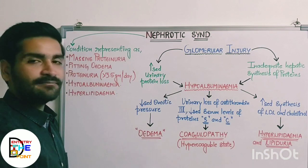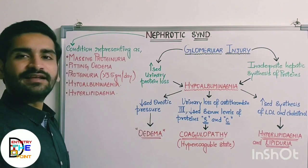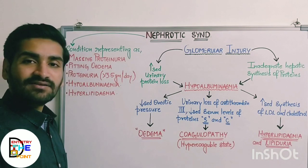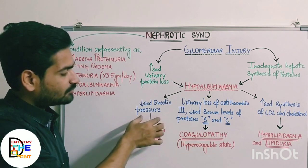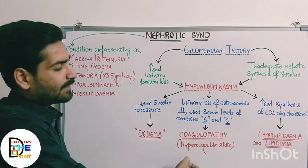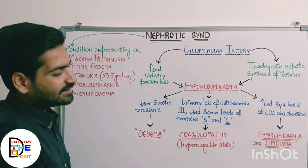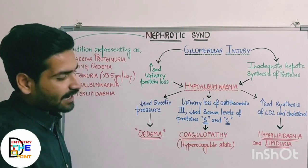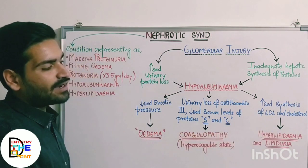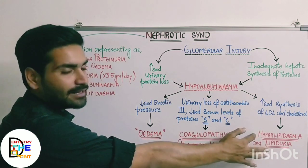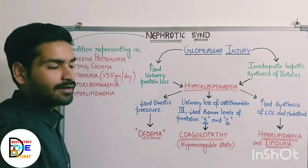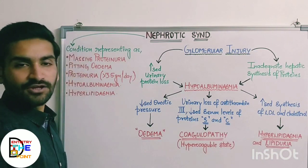Due to decreased oncotic pressure, intravascular fluids move into the extravascular spaces, causing edema. Due to urinary loss of antithrombin-3, there will be coagulopathy — a hypercoagulable state will develop. Due to increased synthesis of LDL and cholesterol, there will be hyperlipidemia, along with lipiduria — excretion of lipids into the urine. This was the pathogenesis of nephrotic syndrome.